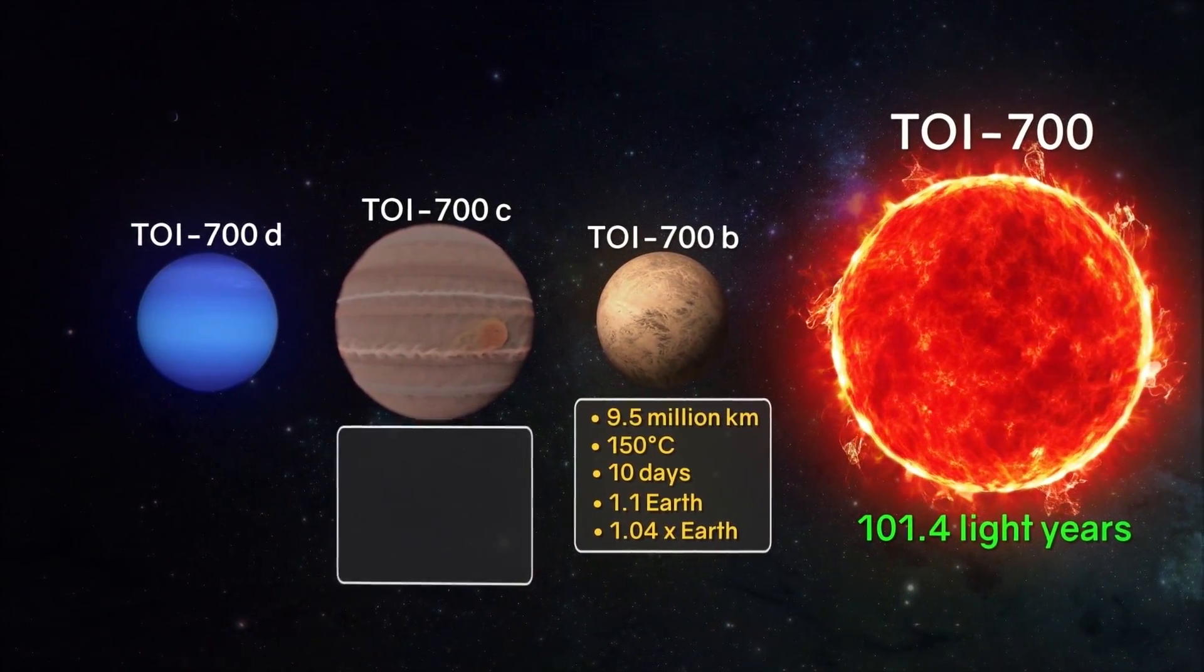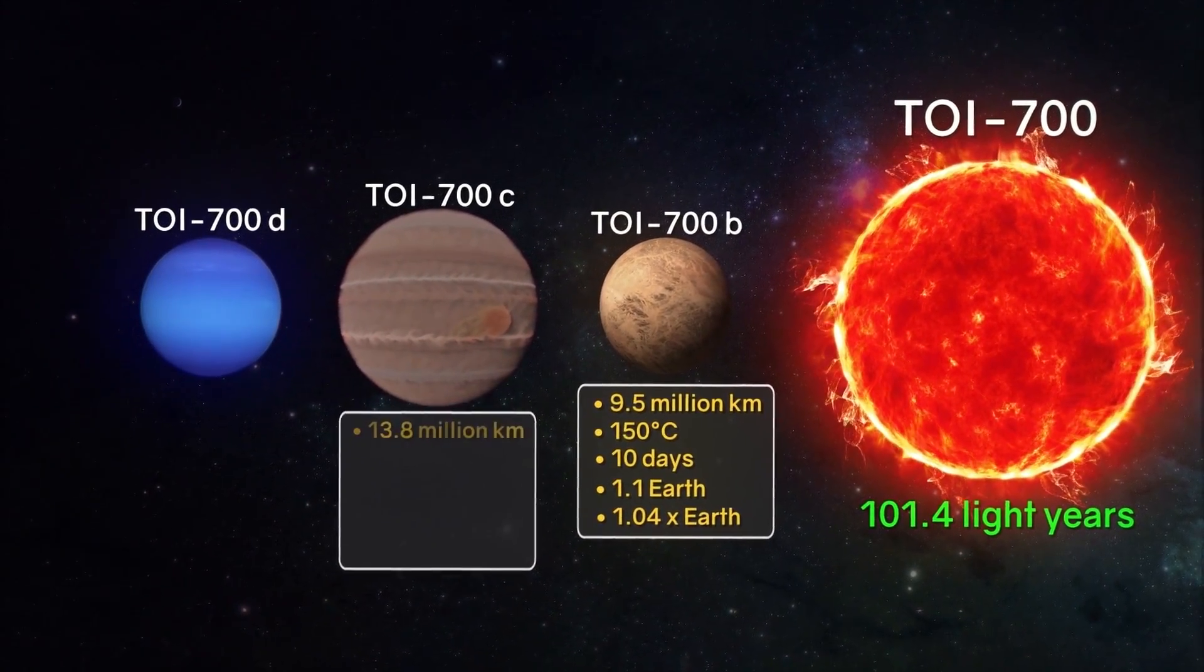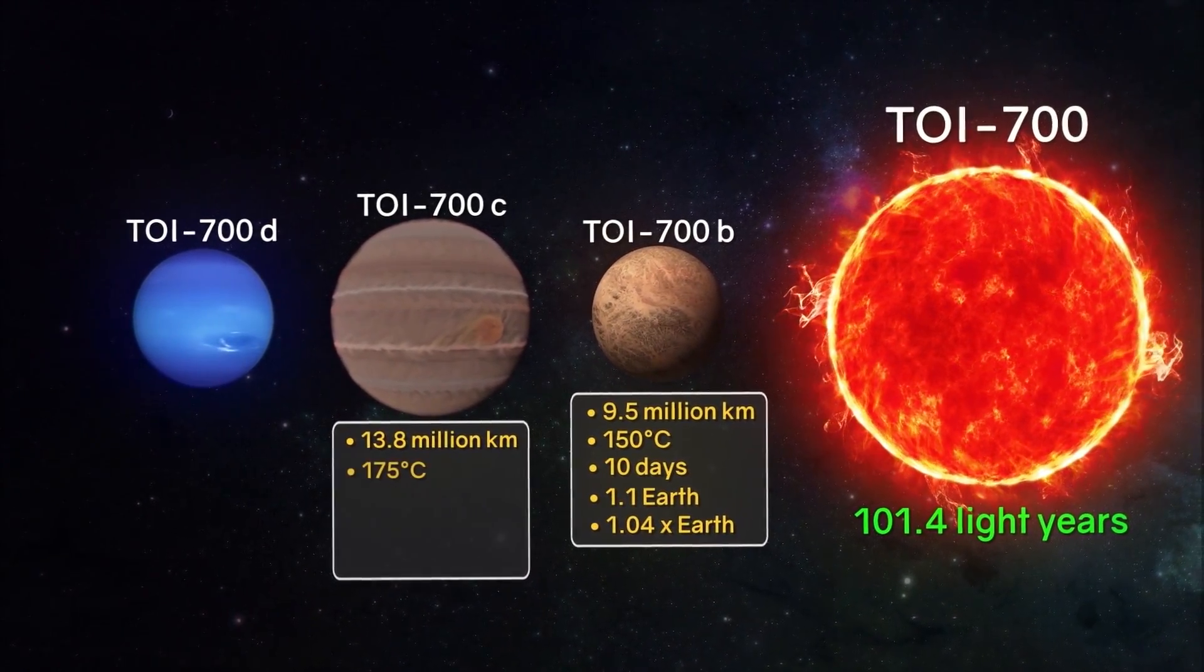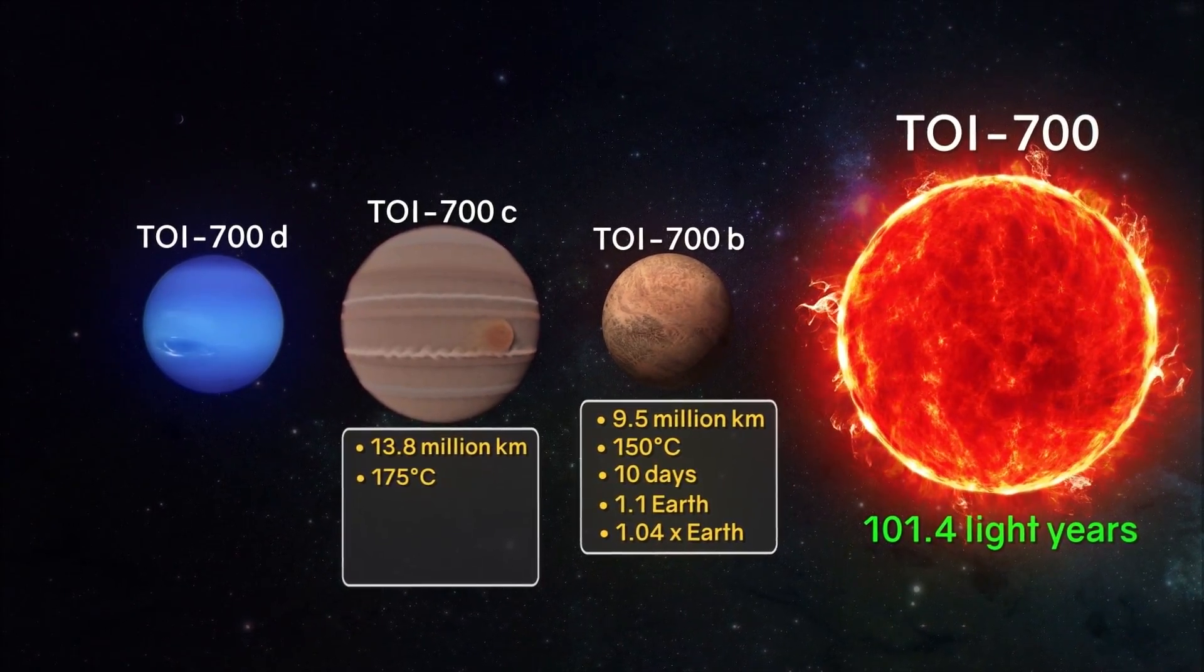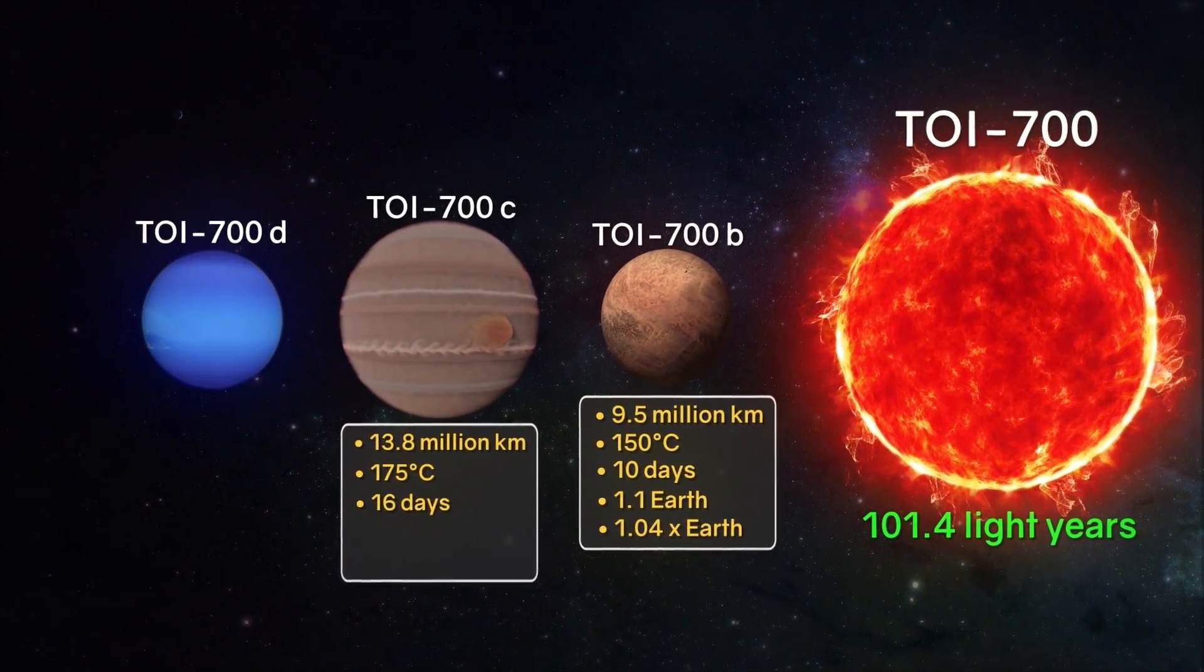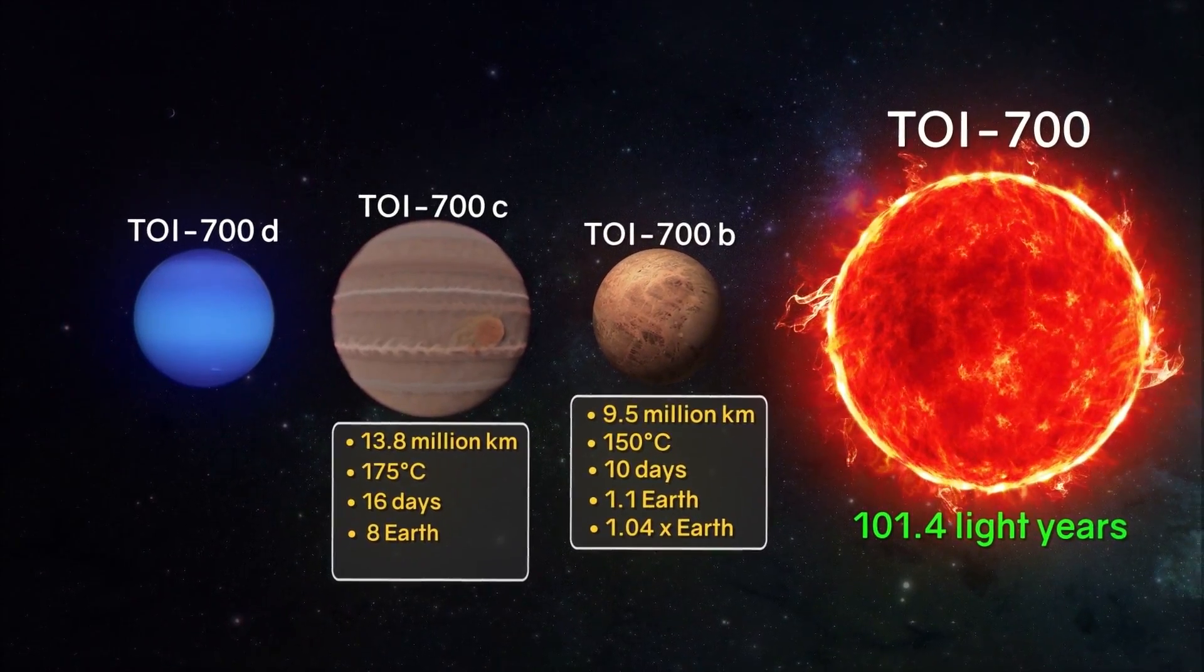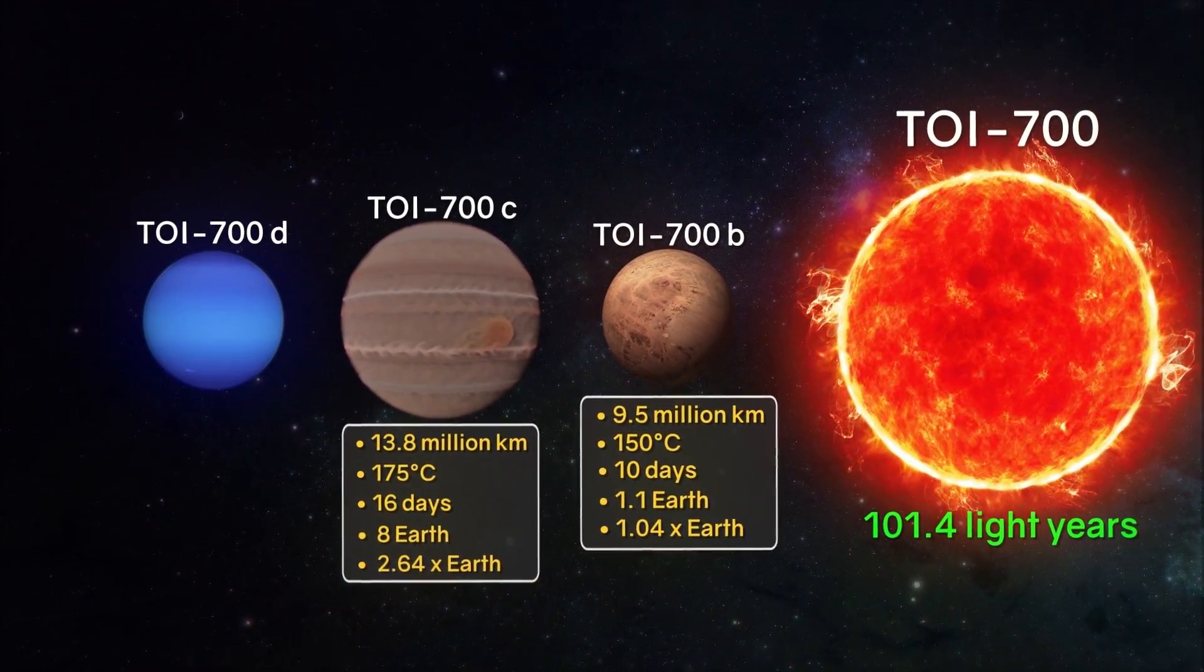TOI 700c: The distance to the star is about 13.8 million kilometers. The average surface temperature is 75 degrees Celsius. The period of rotation around the star is approximately 16 days. The mass is about 8 times that of the Earth. Size 2.64 times the size of the Earth.